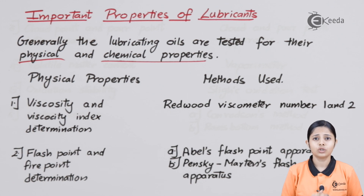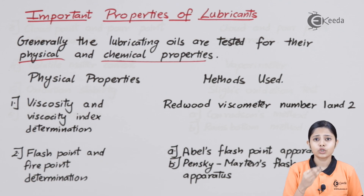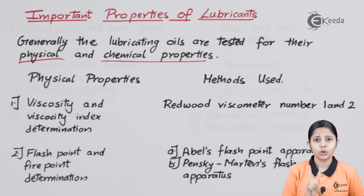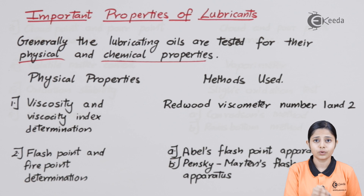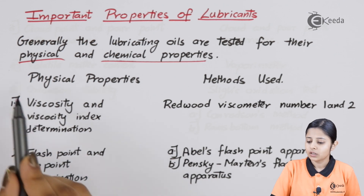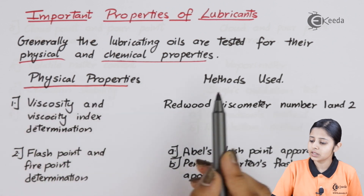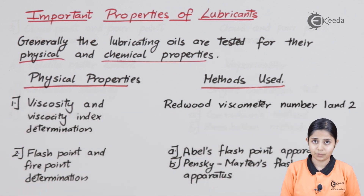A lubricant should serve two purposes. The first purpose is to avoid friction. The second is that the lubricant itself should not react chemically with any of the chemicals present in the machine. To serve both purposes we should first study the physical and chemical properties and see where the oil fits. So we have listed a few physical and a few chemical properties, starting with the physical properties and the methods used for determining them.